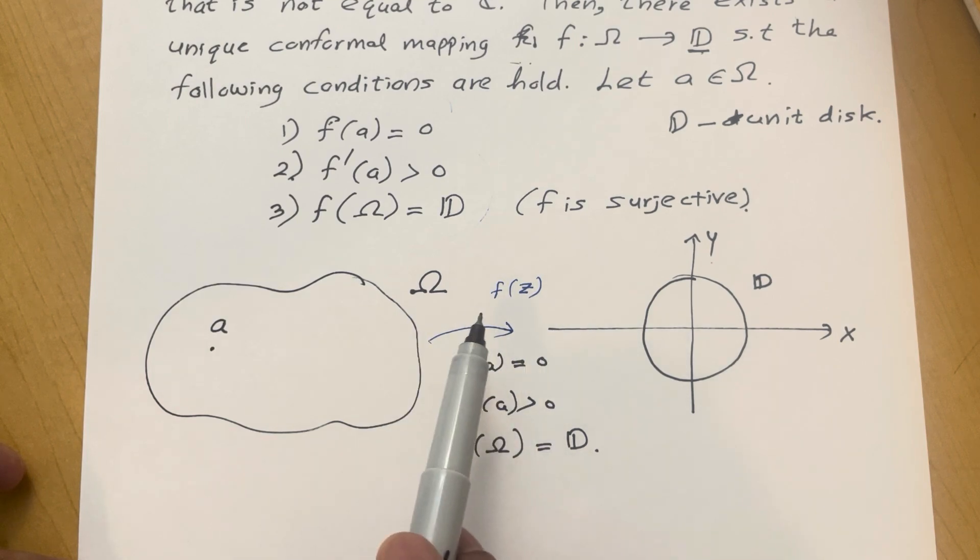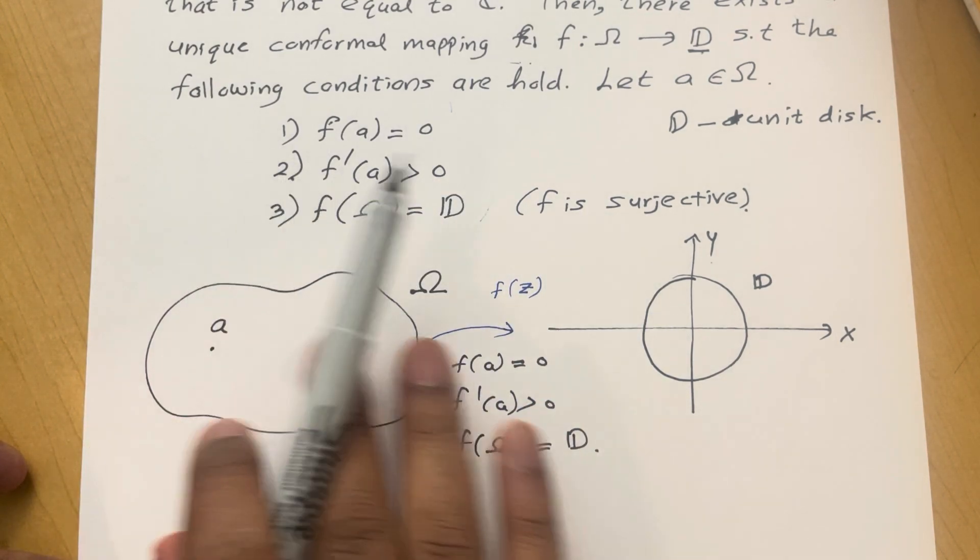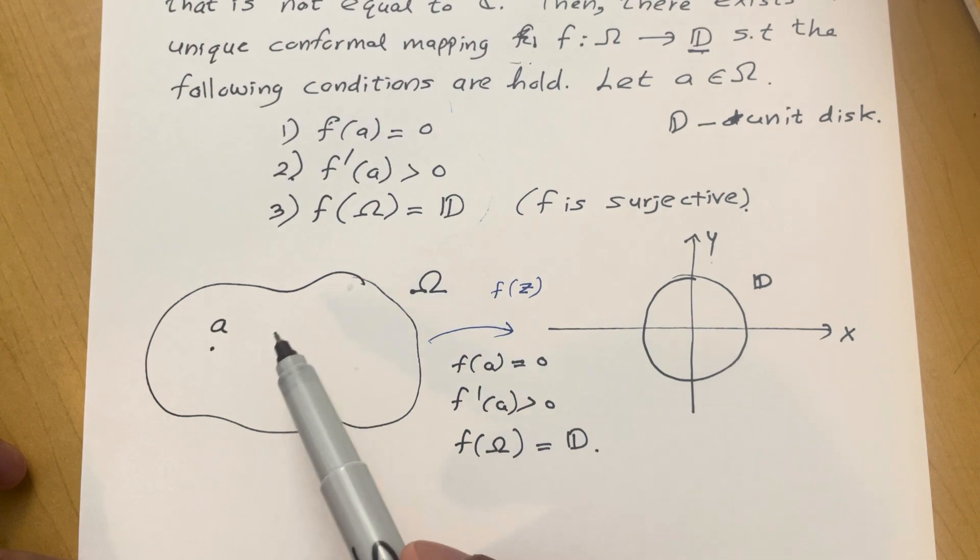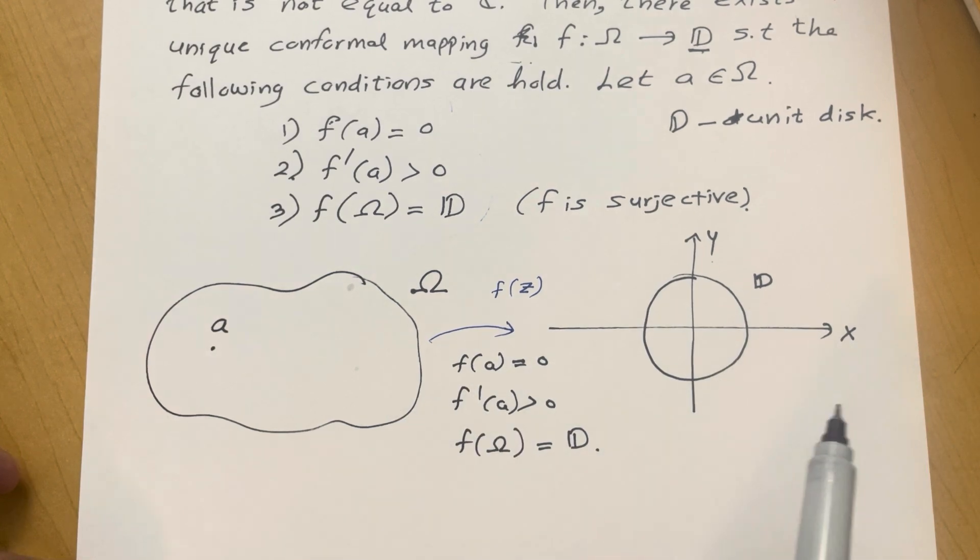Again note that there might be many conformal mappings from this domain Ω to the unit disk, but this f is going to be unique if it satisfies these three conditions. And we can prove this uniqueness by using the Schwarz Lemma.